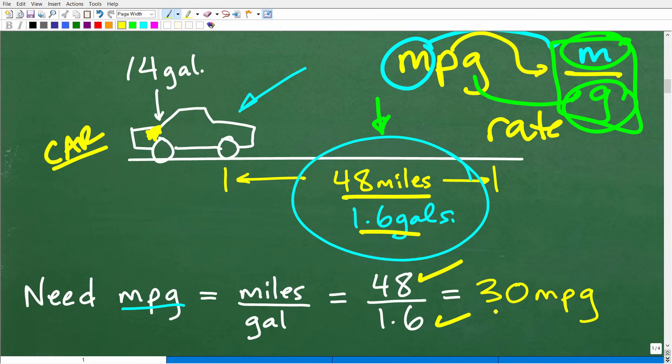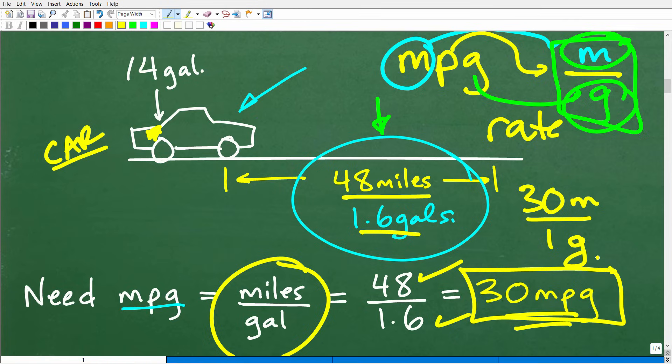So if this car went 48 miles and it used 1.6 gallons to go 48 miles, we can figure out the miles per gallon. Okay. So we're going to take this 48 right here, 48 miles and divided by 1.6, and we're going to get 30, actually, I can kind of, let me establish this a little bit better, 30 miles per one gallon. Okay. Which is 30 miles per gallon. Okay. So hopefully that makes sense. And this is our mileage for this vehicle.